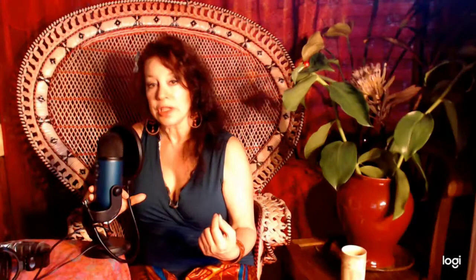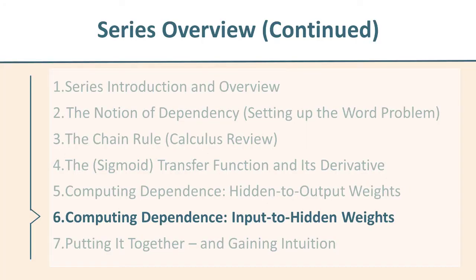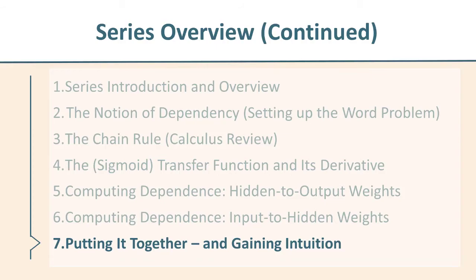This is number four in the series. Prior to this, we just went through the chain rule and its application to all the little tiny component parts that we would need. This is a deeper dive into the transfer function, which is a crucial component of the entire assembly. Following this, we will do the two stages of the backpropagation derivation itself, and then a final stage where we pull it all together, get intuition. Join me.